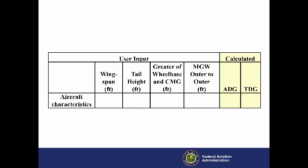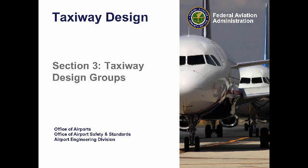You can also determine the ADG — the classification of aircraft based on wingspan and tail height — and TDG, by entering the required dimensions into the Excel spreadsheet design tool provided on the FAA Airport's webpage. As you enter the dimensions, the tool computes the ADG and TDG, as shown in this example. This has been a presentation of Taxiway Design Section 3, Taxiway Design Groups, by the Federal Aviation Administration, produced by Joint Venture Solutions.